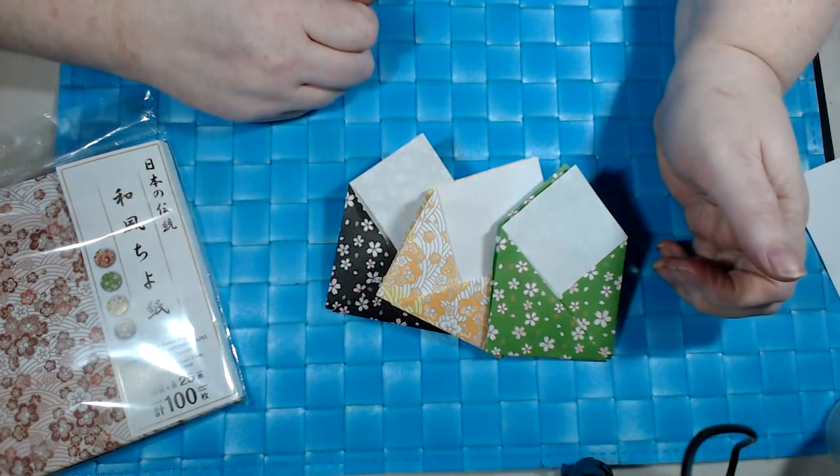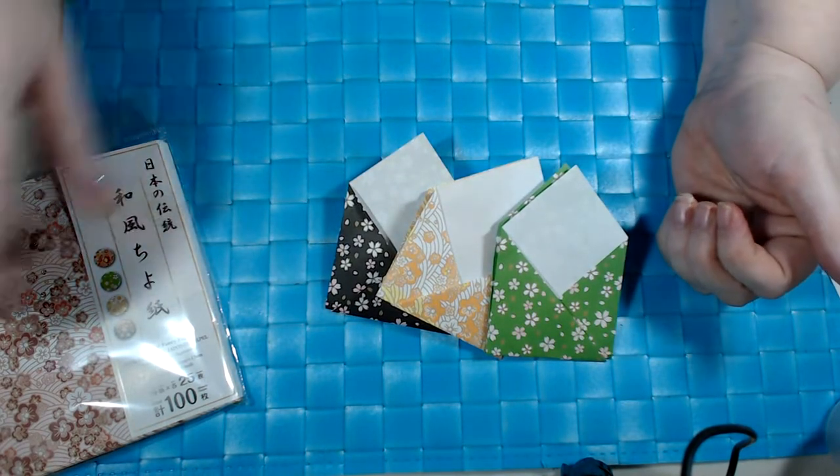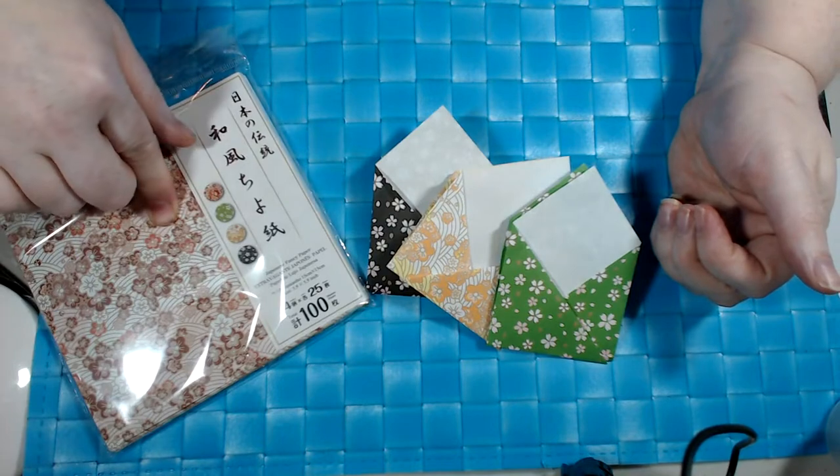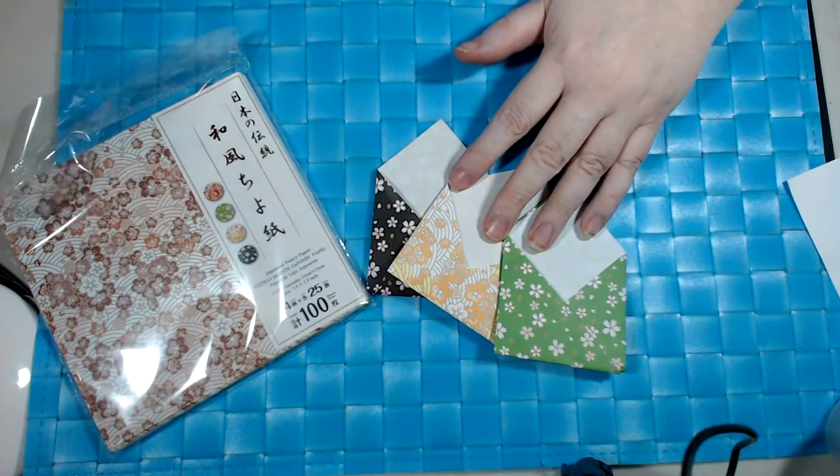What was that, four minutes? And we made two of them slowly. So you can see how easy that would be. A little hundred pack like this from Daiso would give you a hundred tea pockets, which is enough for 200 little tea bags.